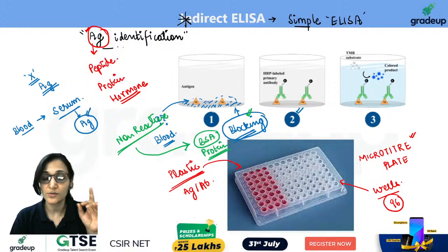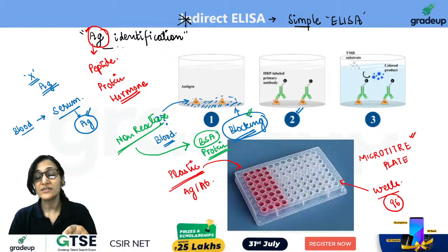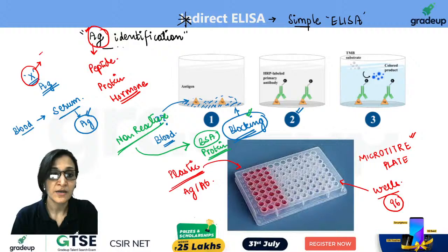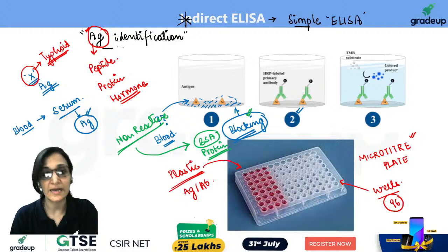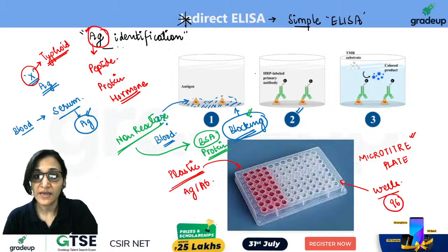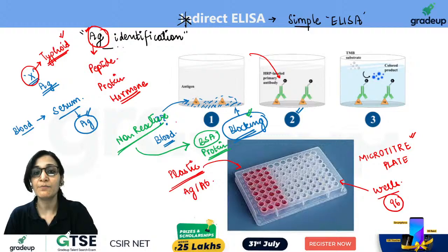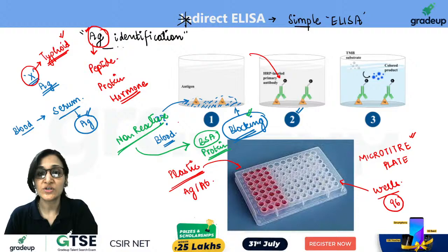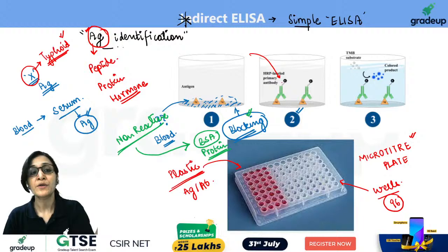After blocking, the space is fully blocked. Now we see that the antigen needs to be identified. The antibody to be added must be specific — for example, if the antigen is for typhoid, then a typhoid-specific antibody is needed. That antibody is obtained from outside, from a pharmaceutical company that makes antibodies. The doctor specifies which disease to test for, and the lab uses that specific antibody.